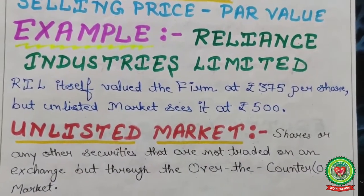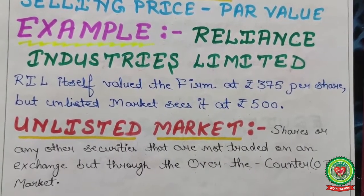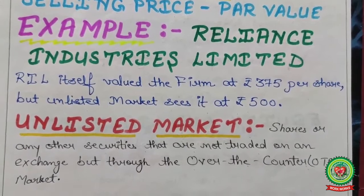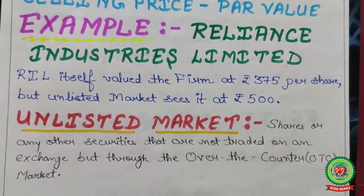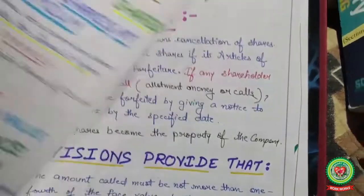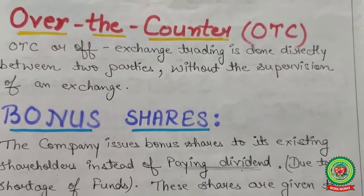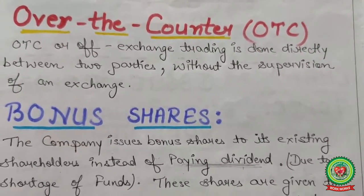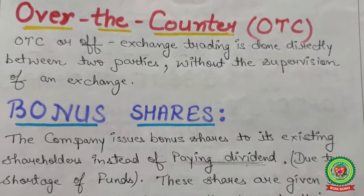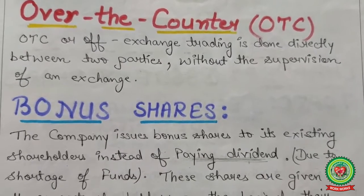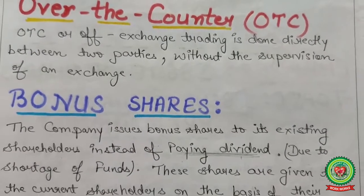Now a few terms related to this: an unlisted market means shares or any other security that are not traded on any exchange but through the over-the-counter market. When not listed on a stock exchange like BSE or NSE, it is considered OTC. OTC or off-exchange trading is done directly between two parties without the supervision of any exchange — no BSE, no National Stock Exchange — just over-the-counter dealing between two parties with no supervisory person.